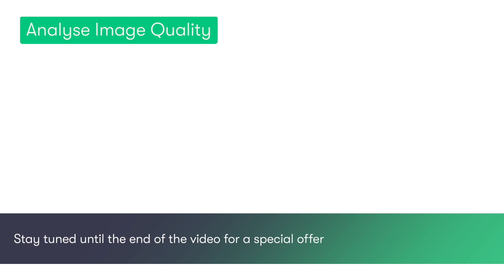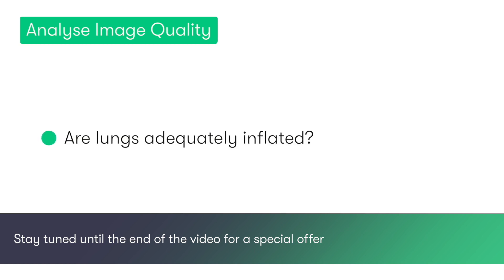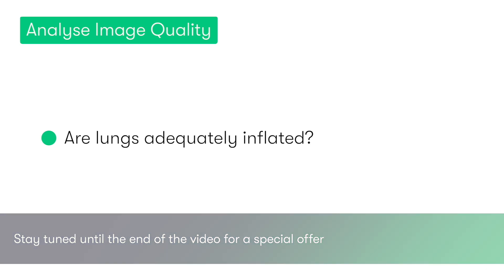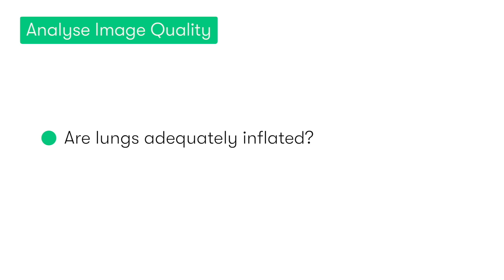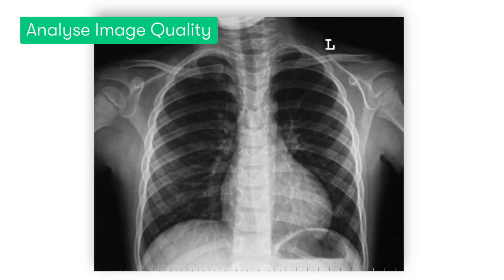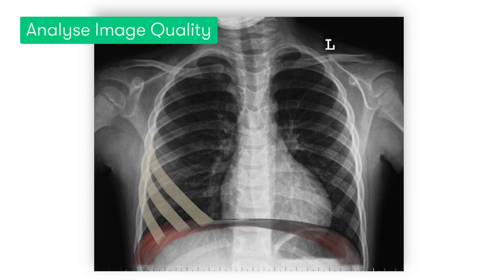A refers to analysing the quality of the image. To do this, we first want to make sure the lungs are adequately inflated, so that we're able to visualise the maximum amount of lung tissue. In an adequately inflated chest, either the 5th, 6th, or 7th anterior ribs should cross the diaphragm along the mid-clavicular line. So in this case, we can say that the chest is adequately inflated.